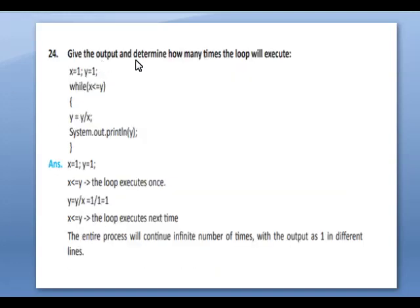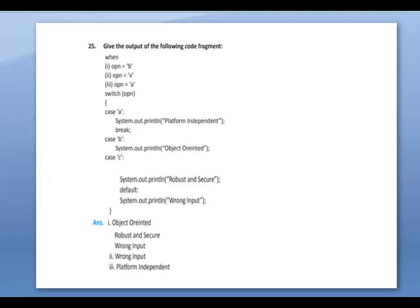Give the output and determine how many times the loop will execute — the steps are shown. Give the output of the following segments. Here, OPN equals B first, then OPN equals X, then OPN equals A.